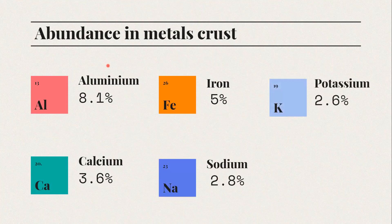Following those are potassium at 2.6% and magnesium. This is the decreasing order of metal abundance in the earth's crust.